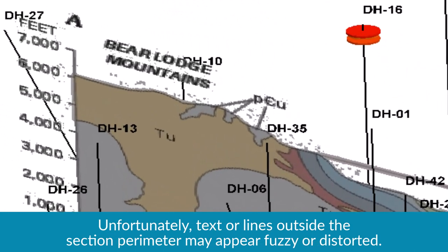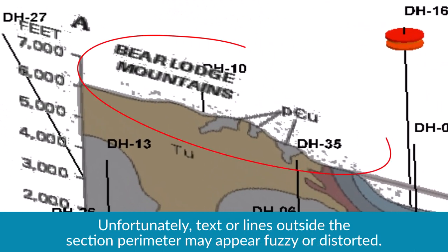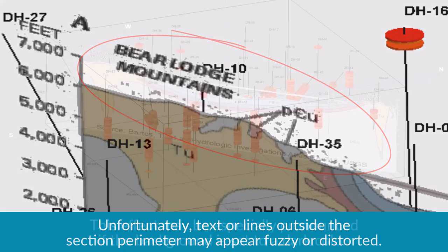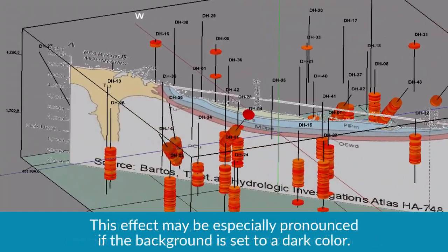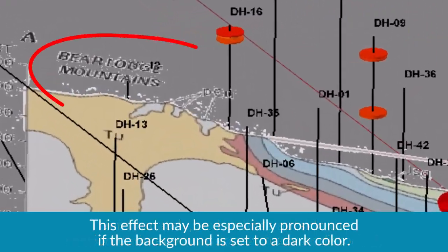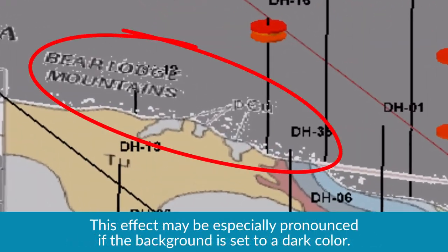Unfortunately, text or lines outside the section perimeter may appear fuzzy or distorted. This effect may be especially pronounced if the background is set to a dark color.